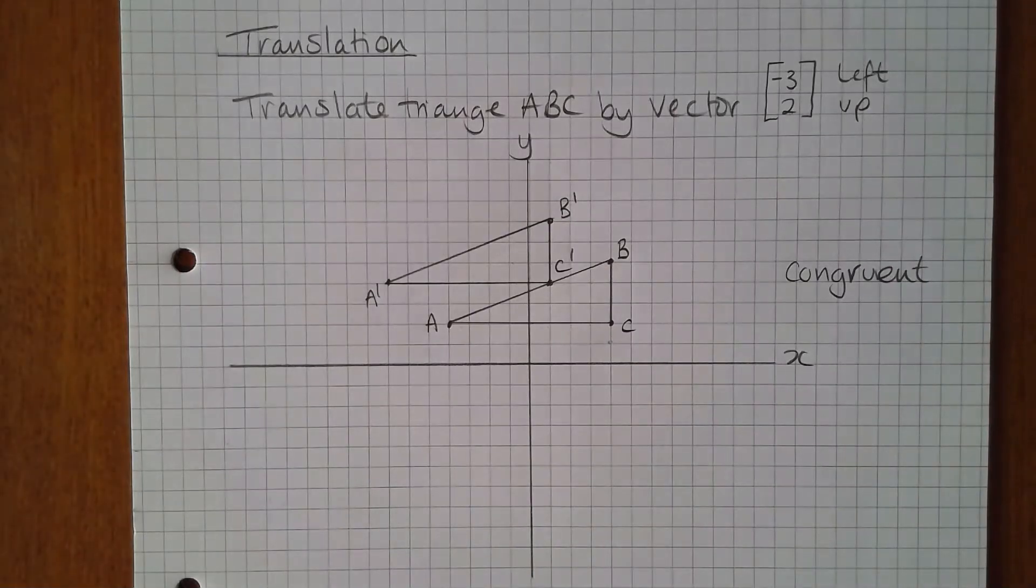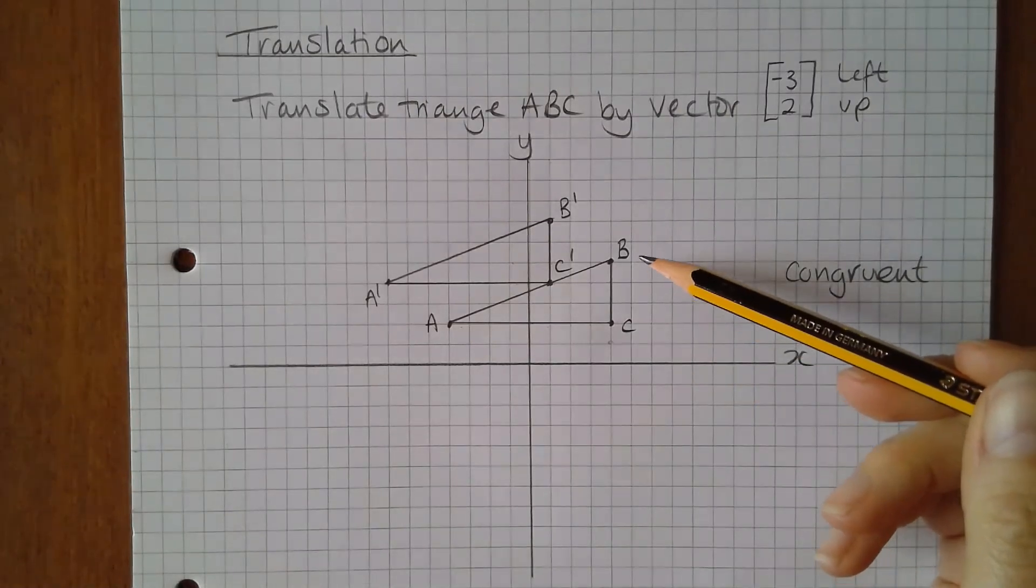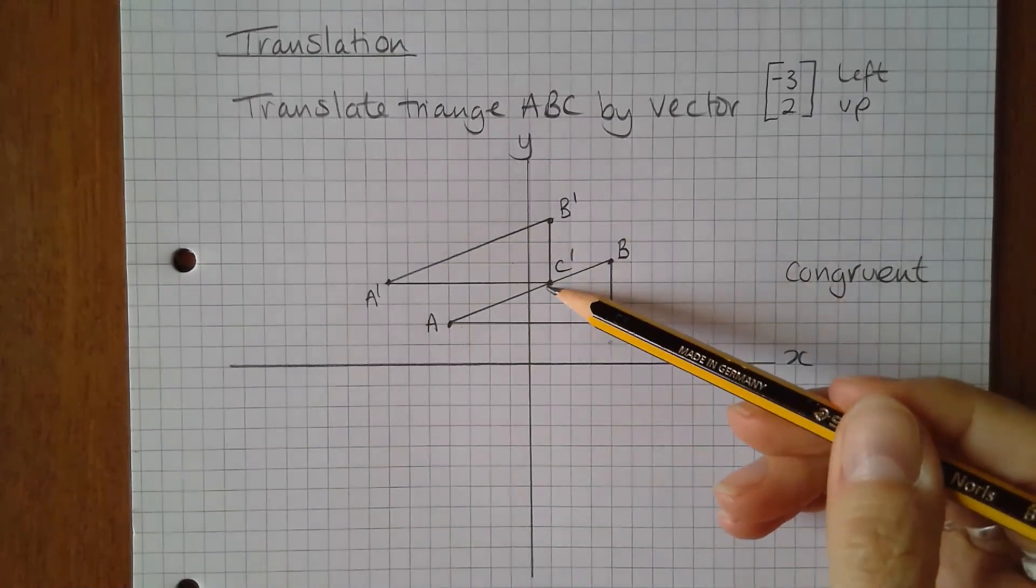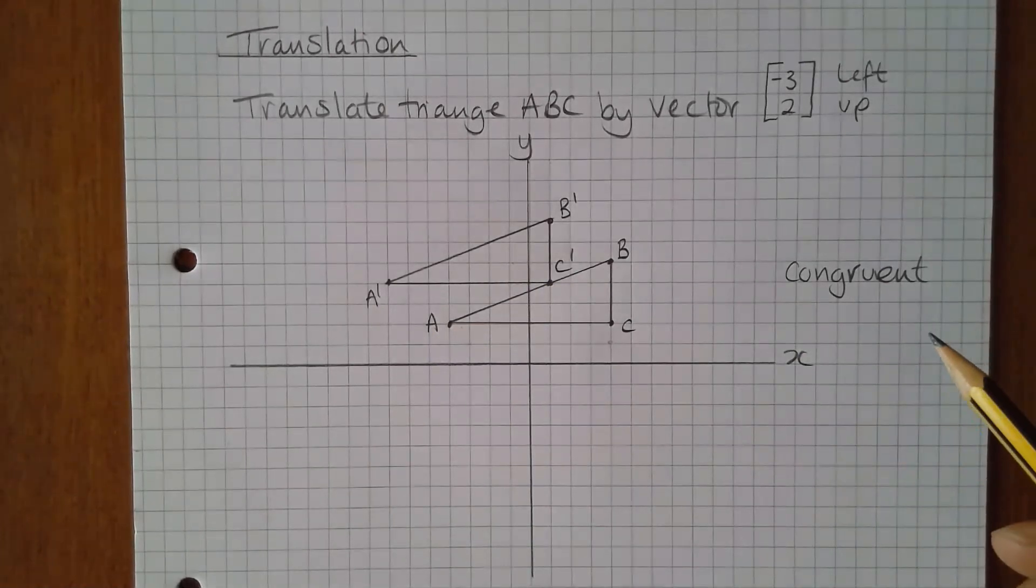So if I had made a mistake on one of the vertices the triangle would look different and we're very good as humans at recognizing when something doesn't look quite right. So if you translate each vertex independently then you can be fairly sure that you've done it correctly.